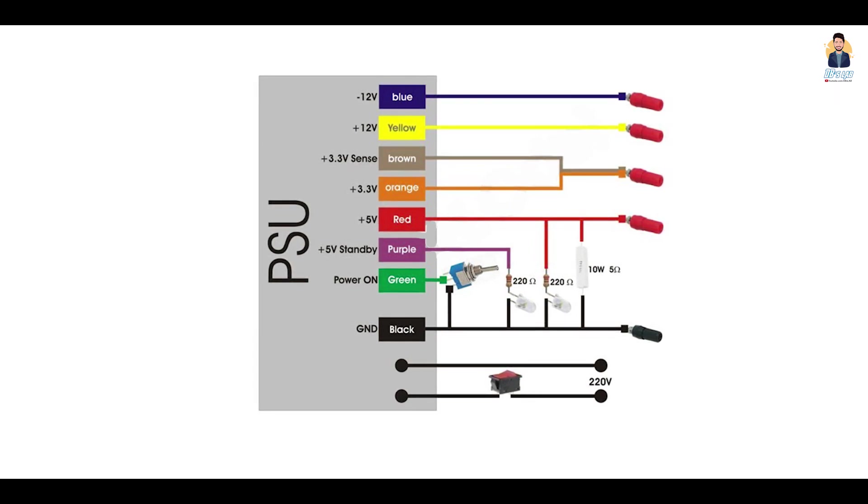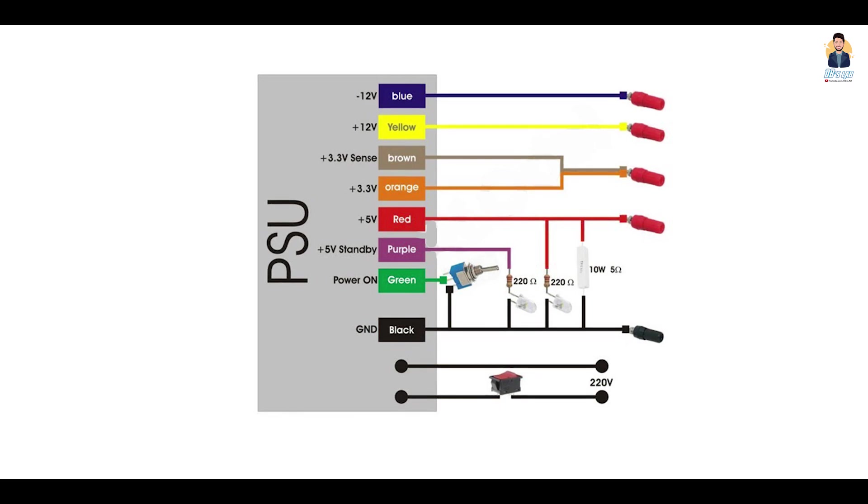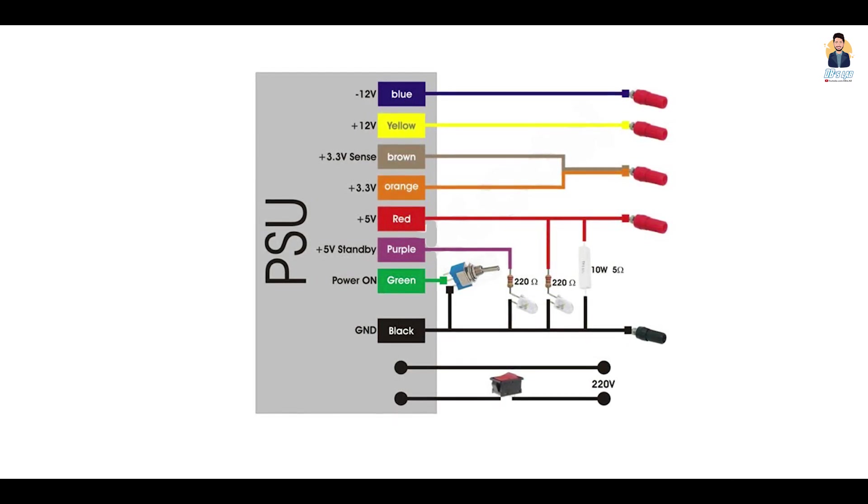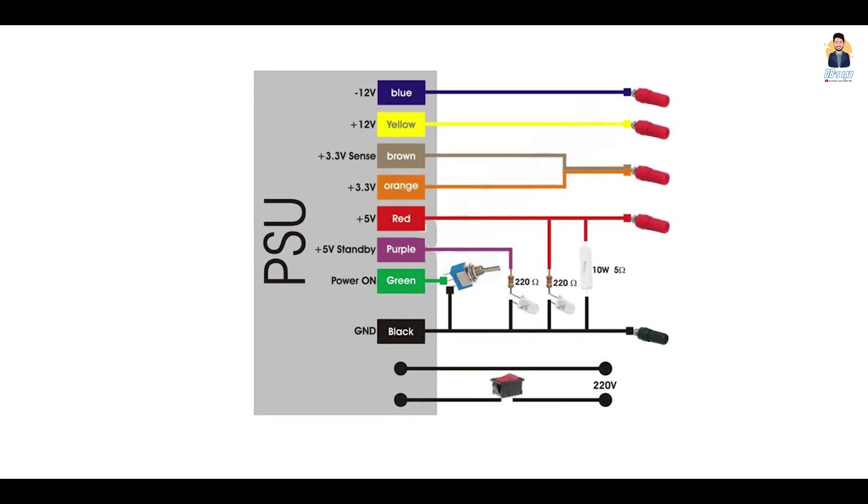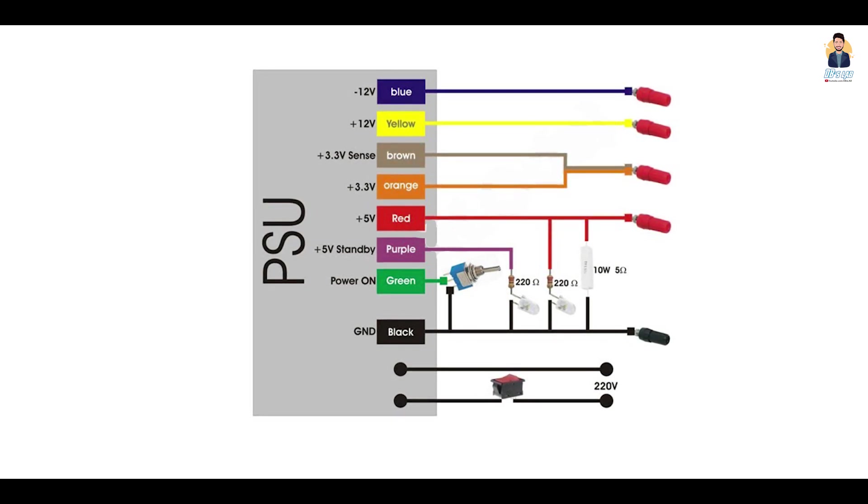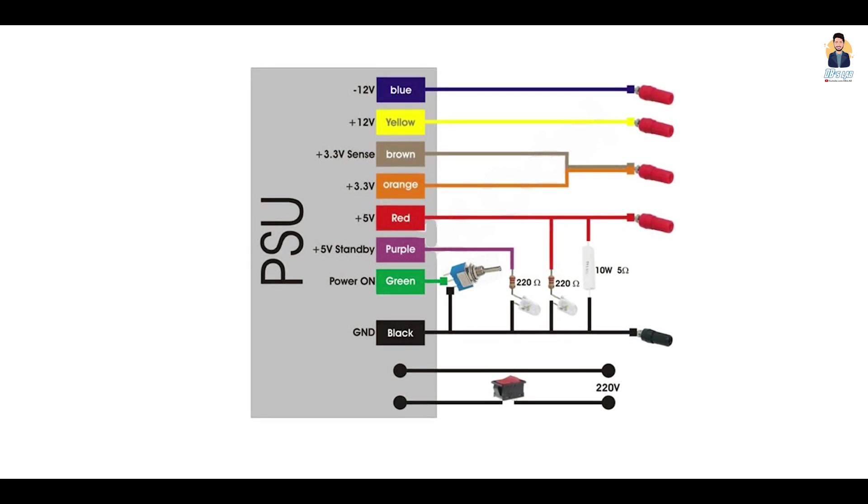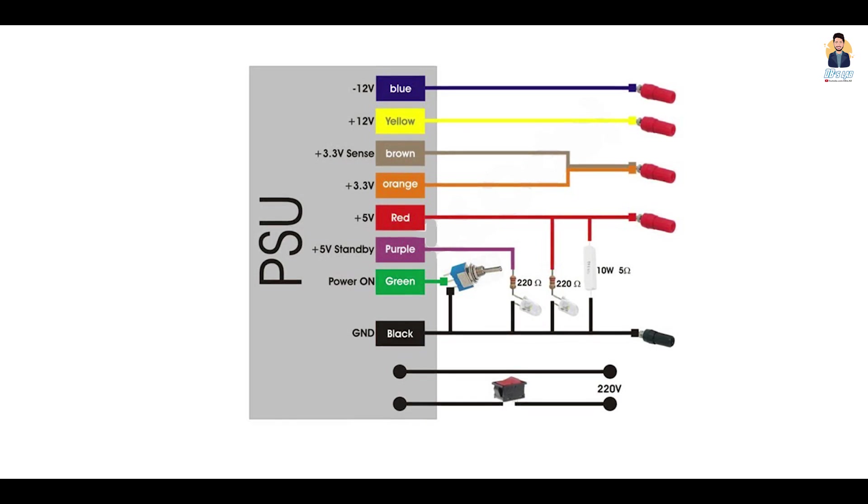The 5V standby is used with a LED to denote power. And the main 5V rail is used with another LED to denote when the power supply is turned on or off.